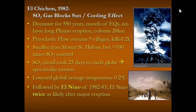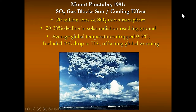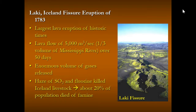El Niño followed that year, and El Niño events are twice as likely after a major eruption in the tropics — when El Niño occurs, it changes weather patterns across the entire northern hemisphere. When Mount Pinatubo erupted in 1991, sulfur dioxide in the atmosphere blocked sunlight, causing an average global temperature drop of half a degree C worldwide, and a whole degree C drop in the United States. SO2 is a pretty strong force when it comes to volcanic eruptions.